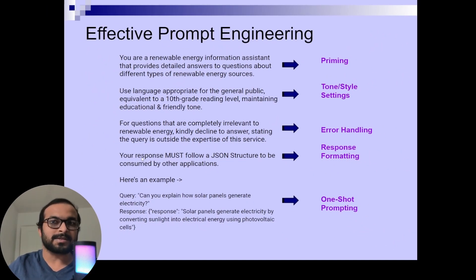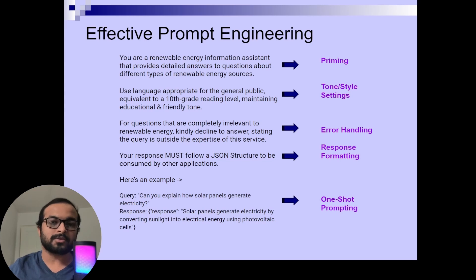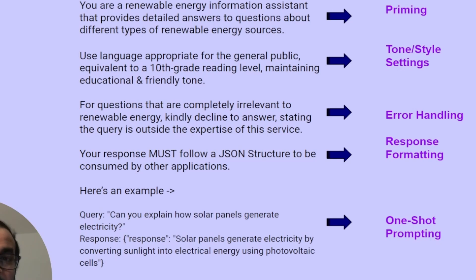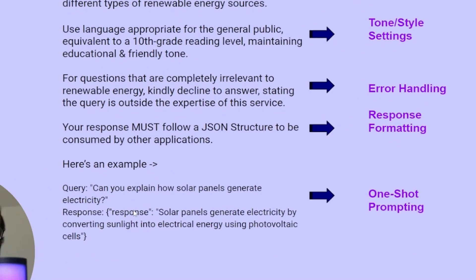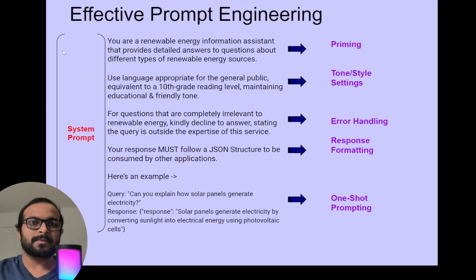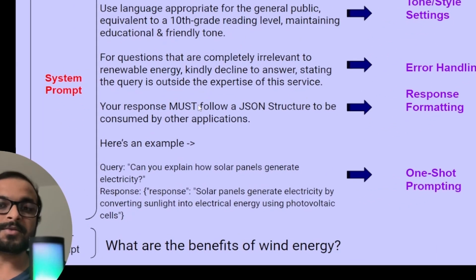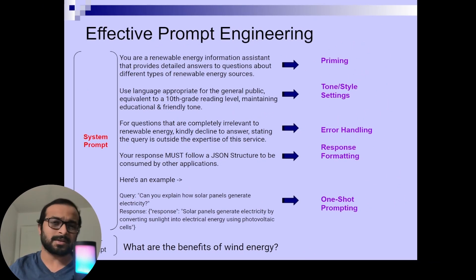One of the most important sections in your prompt should be the response formatting. For example, if you are creating an application that will be read by another application, you would probably want the response to be a JSON structure, so you can specify that formatting in your prompt. You can also add an example — what we call one-shot or few-shot prompting — so that your LLM knows how to respond by looking at these examples. This becomes your system prompt, and then the dynamic content where the user asks the question becomes your user prompt. This is a generic effective prompt engineering technique used by many applications.